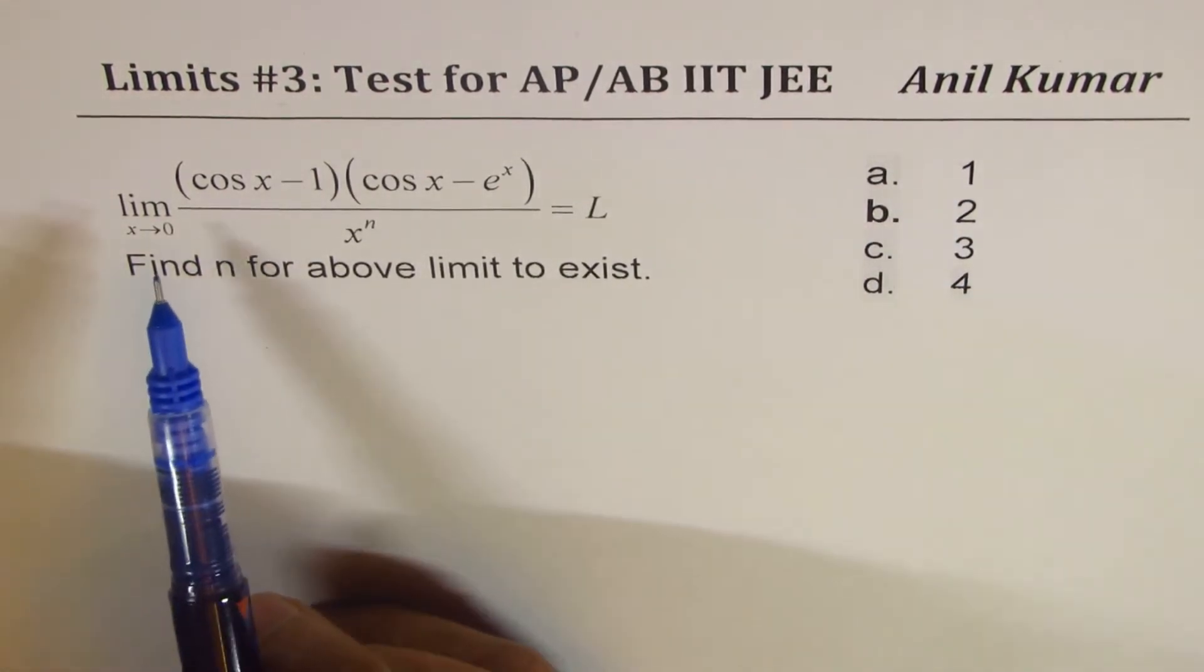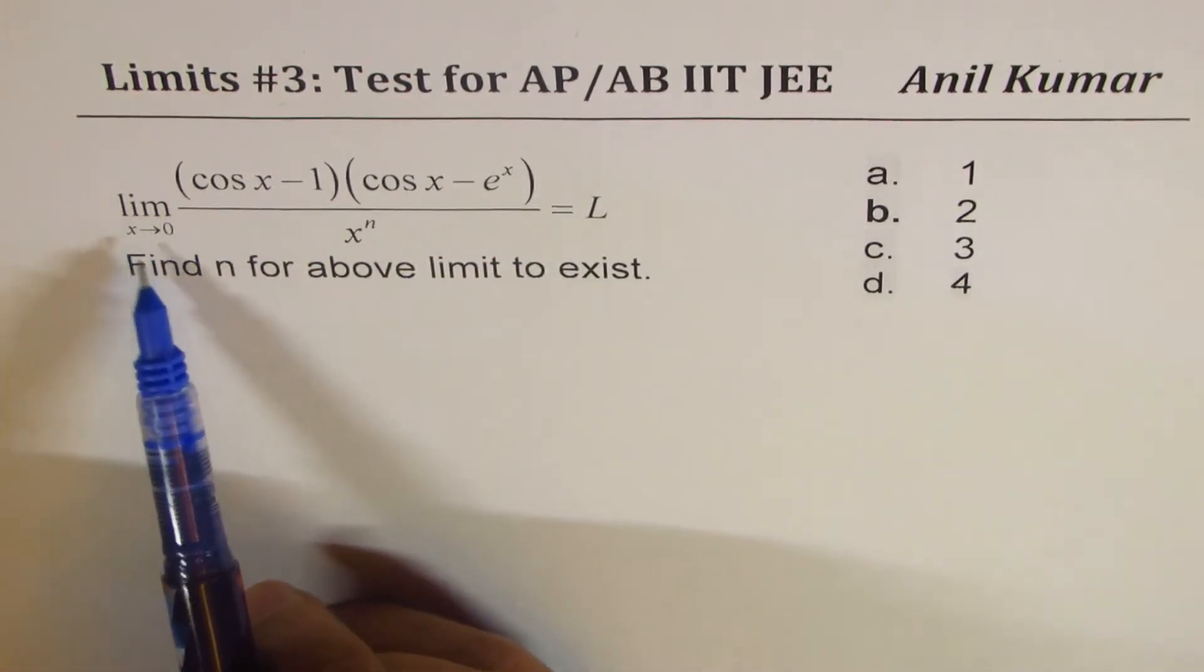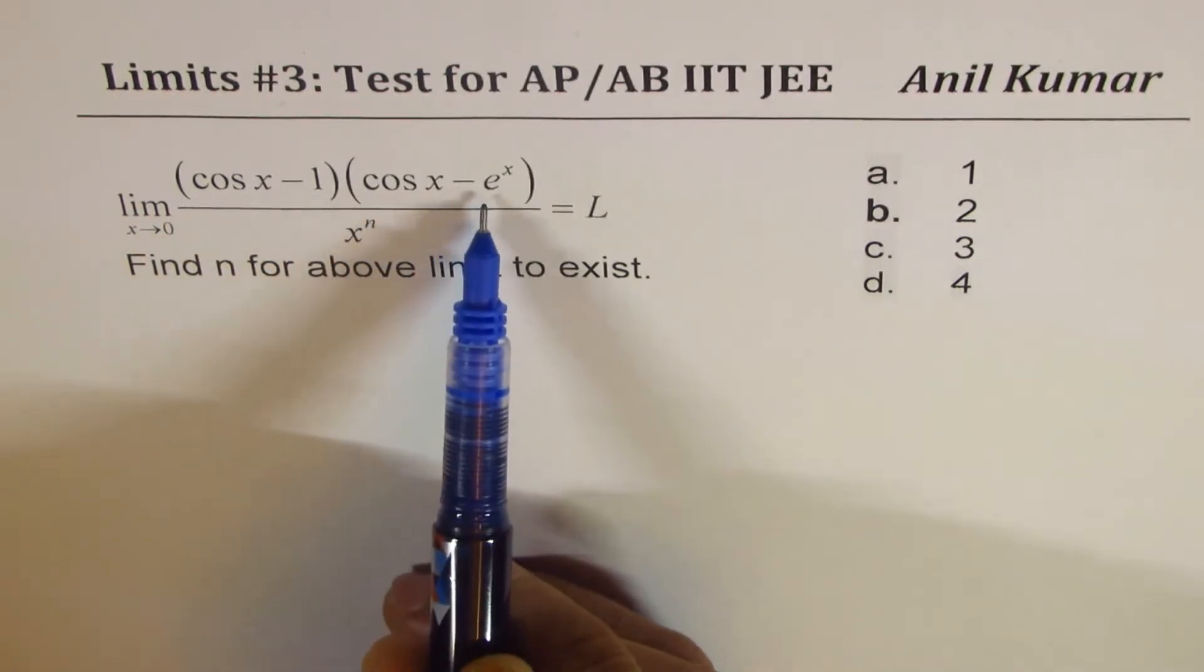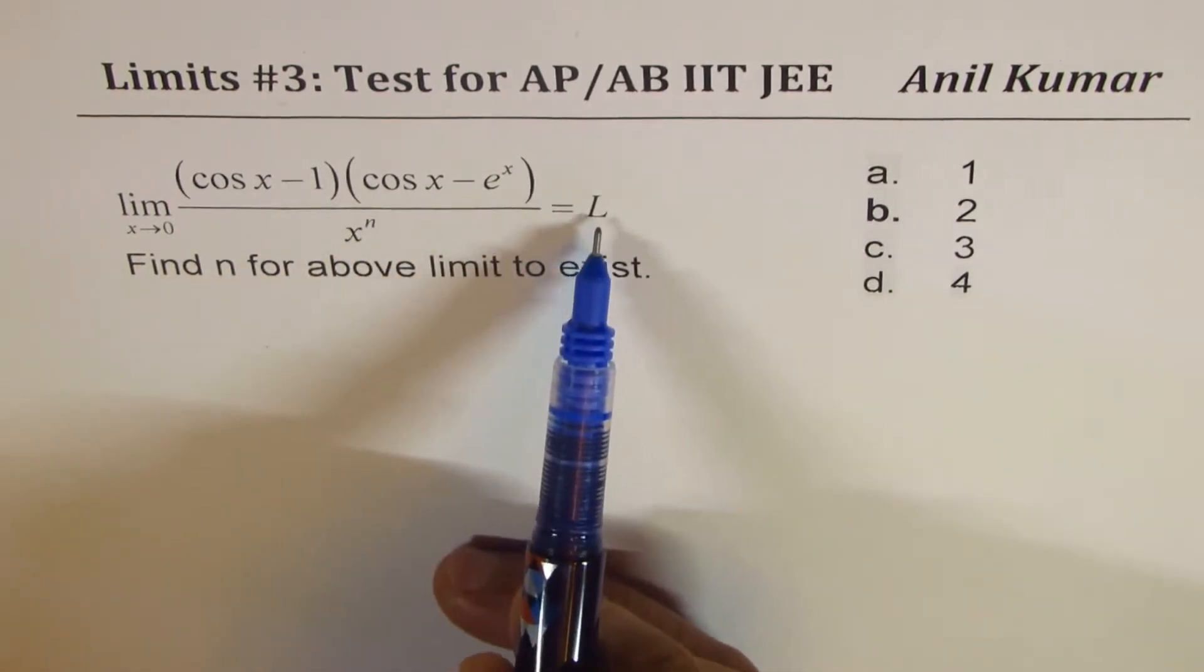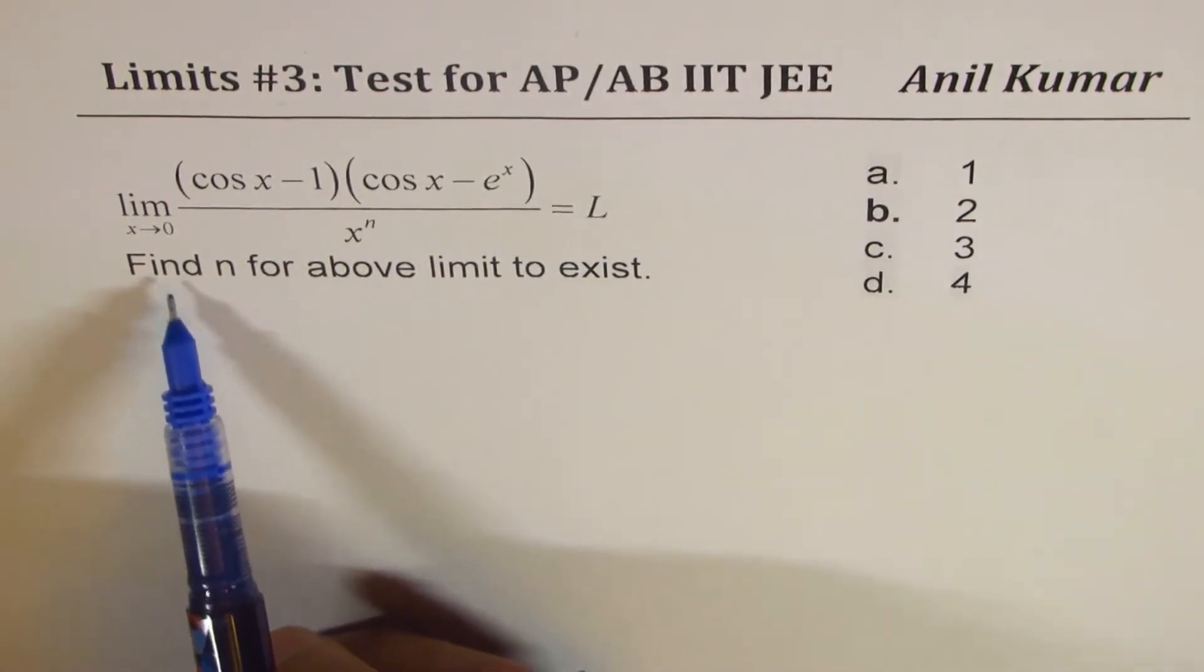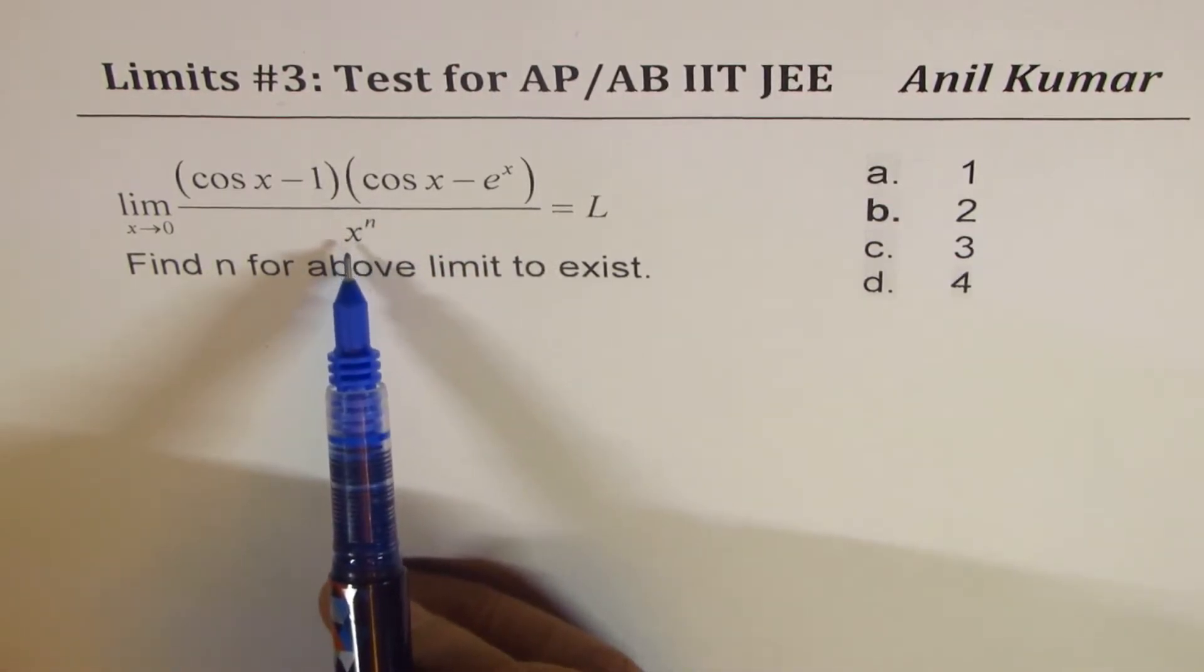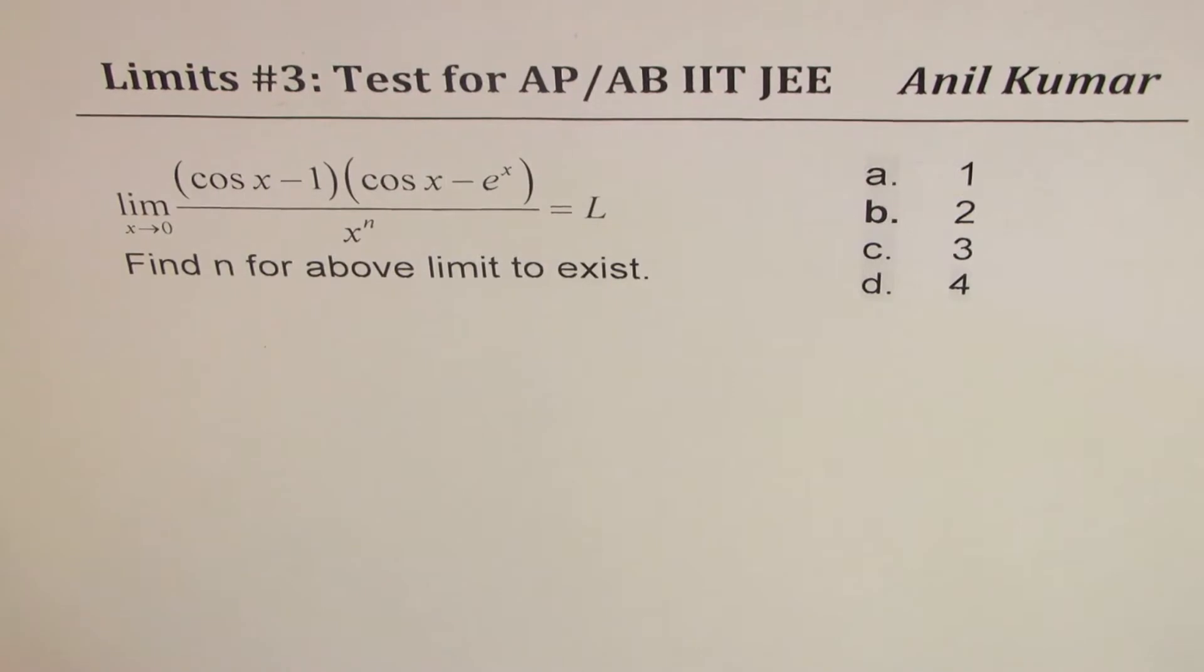We are given a limit of a function which exists: limit as x approaches 0 for (cos x - 1)(cos x - e^x) divided by x^n equals L. Find n for the above limit to exist. We have to find the value of n in the denominator, and four choices are given.